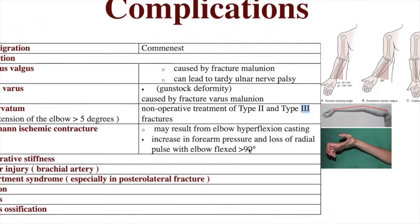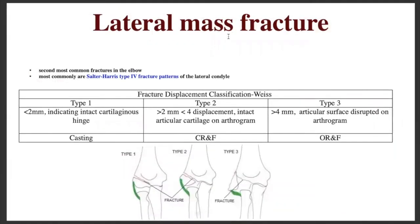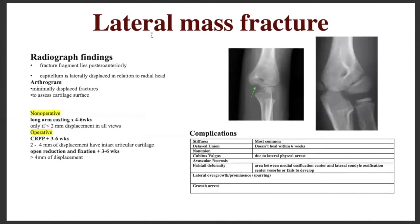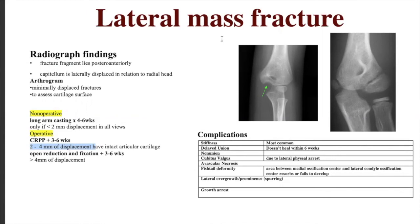The second most common elbow fracture is the lateral condyle fracture, most commonly a Salter-Harris type 4 fracture involving the epiphysis, physis, and metaphysis. The Weiss classification determines management: type 1 has less than 2 mm displacement with an intact cartilaginous hinge — managed by casting; type 2 has 2–4 mm displacement with an intact articular cartilage on arthrogram — managed by closed reduction and fixation; type 3 has more than 4 mm displacement with a disturbed articular surface — managed by open reduction and fixation. On X-ray, the fracture fragment is displaced anteriorly and the capitellum is laterally displaced relative to the radial head.